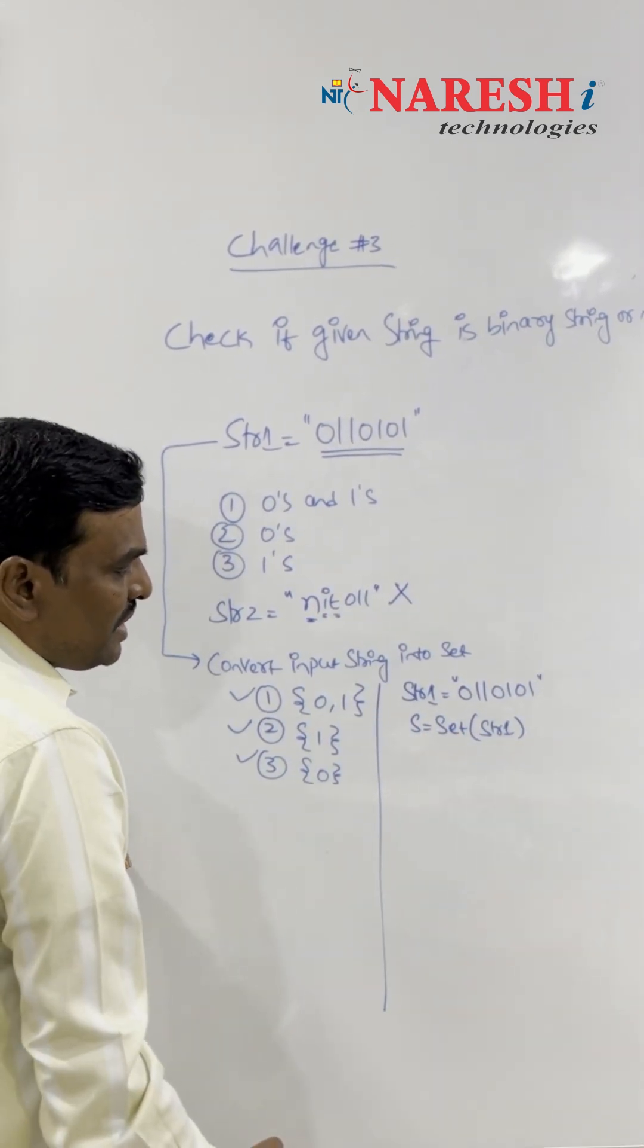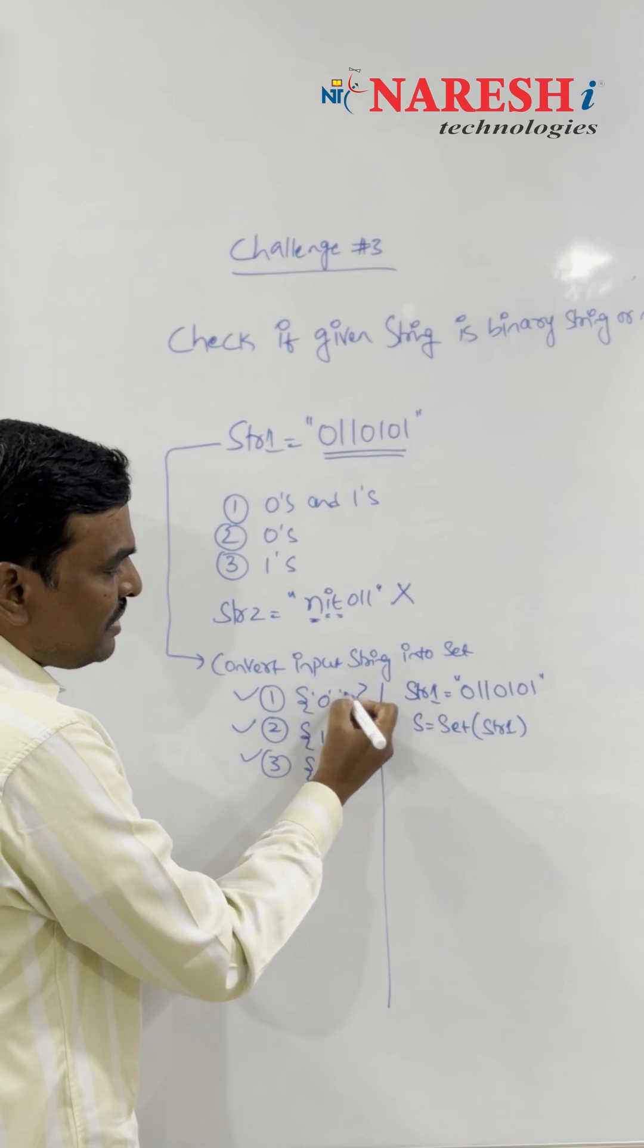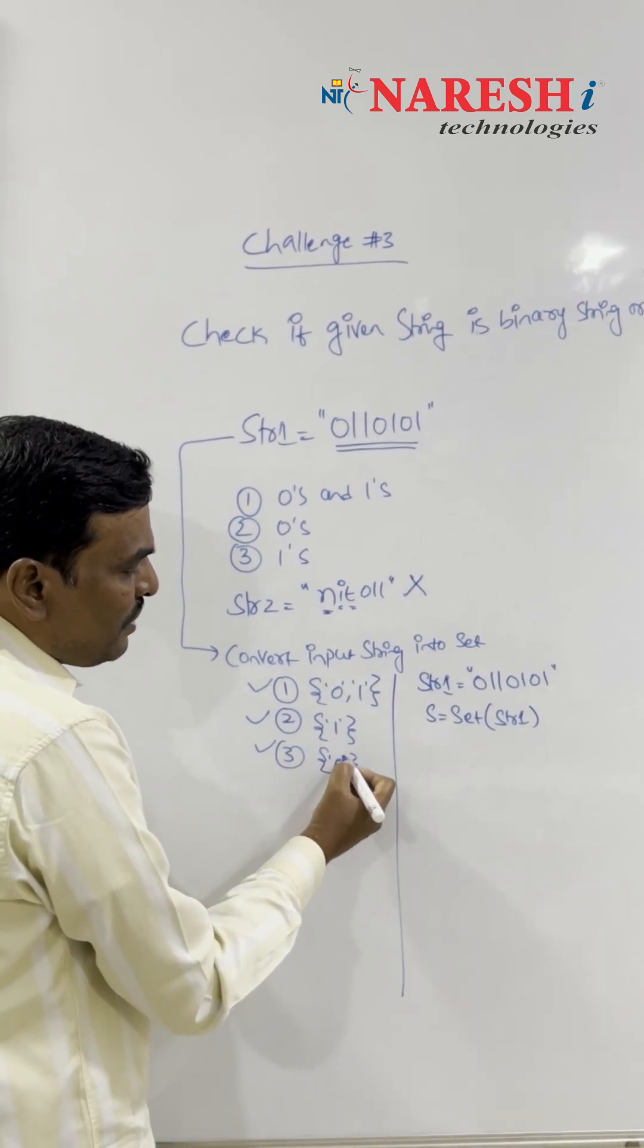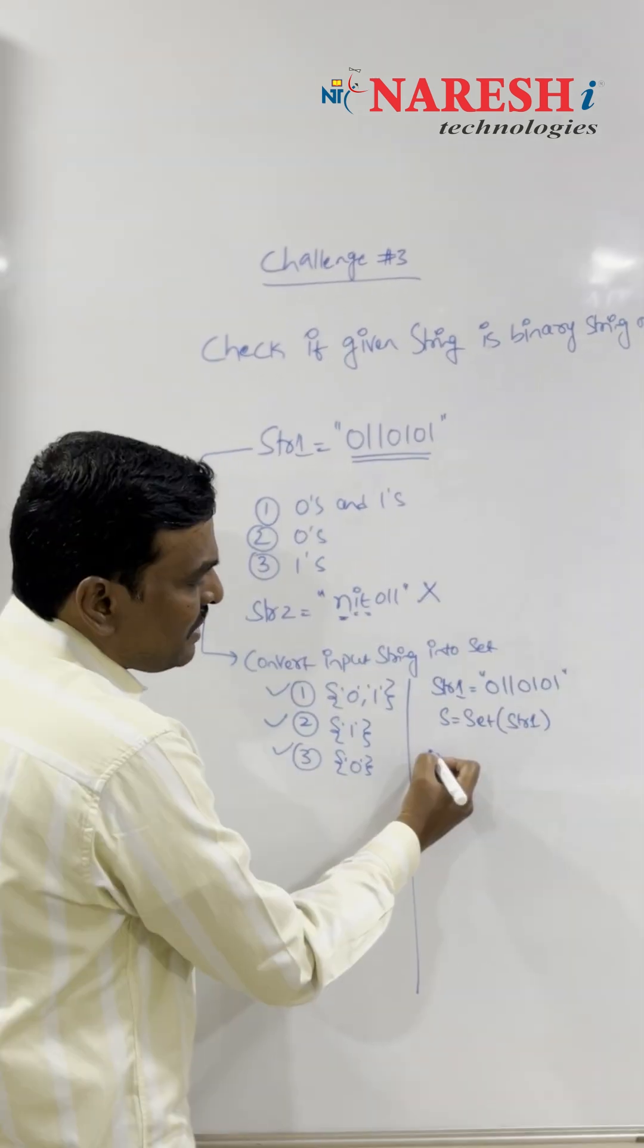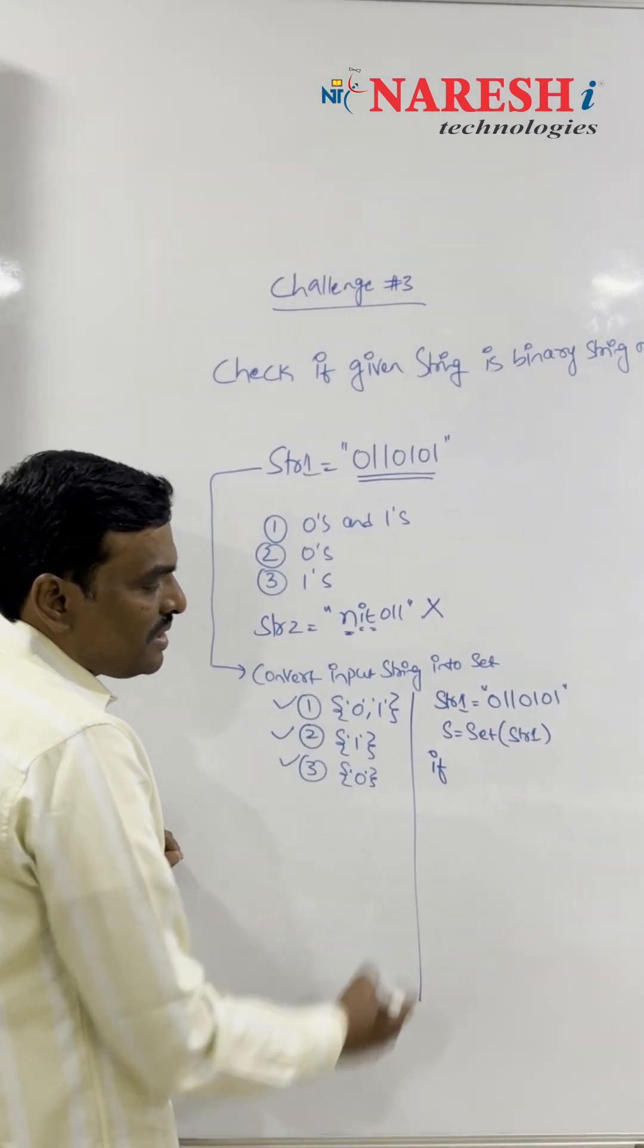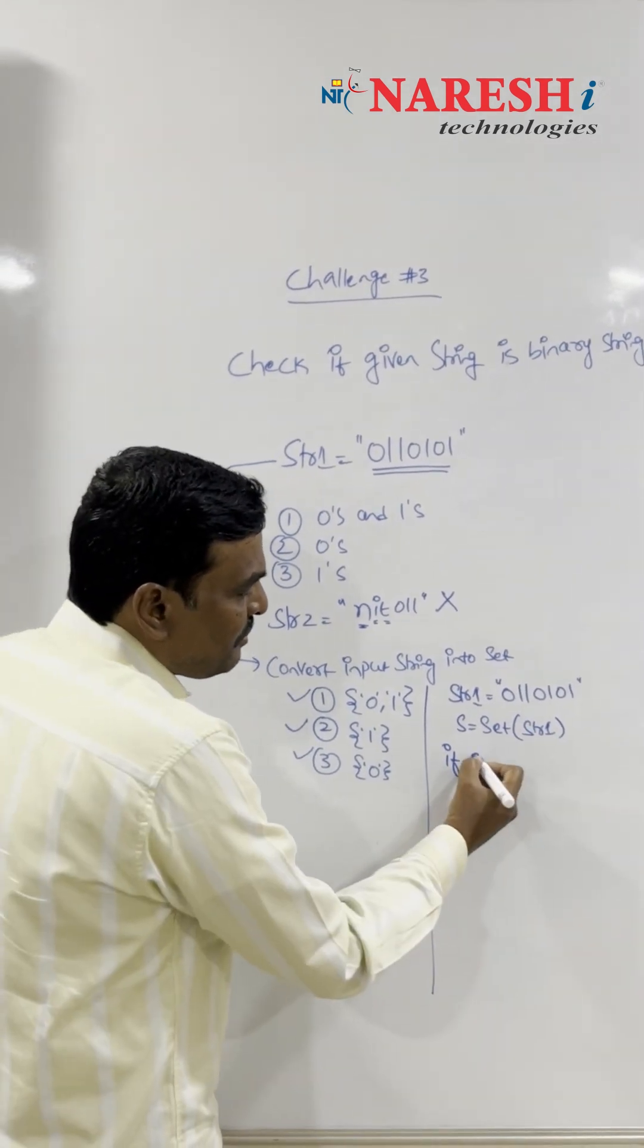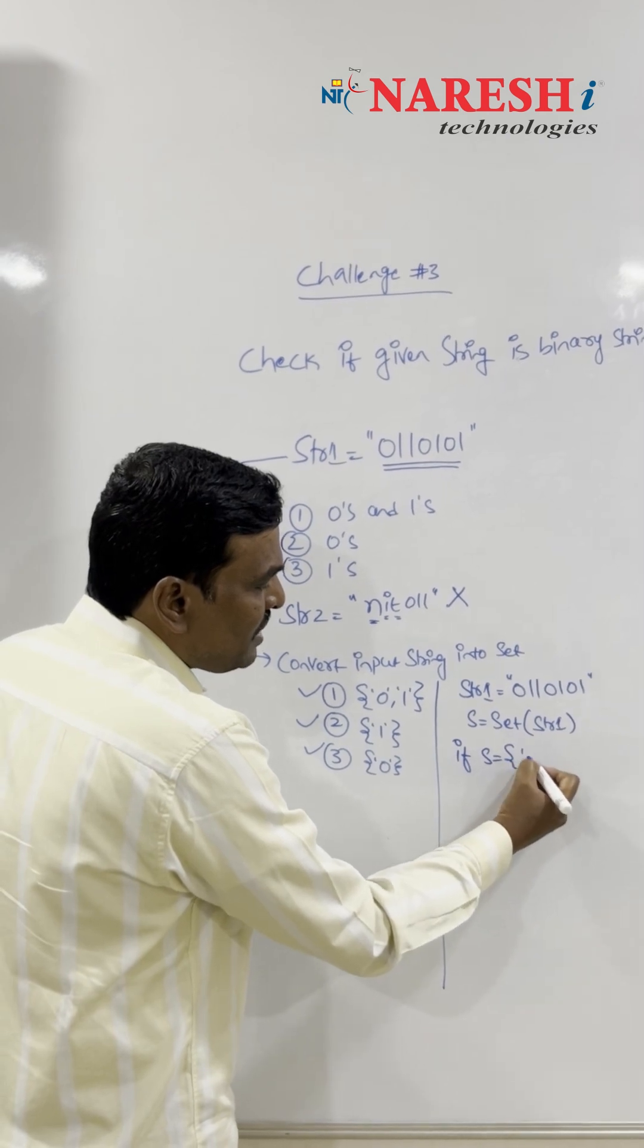Now here all these are strings, so 1 and 0 are all strings here. You'll try to check the condition saying if s equals, I'm writing here 0 comma 1.